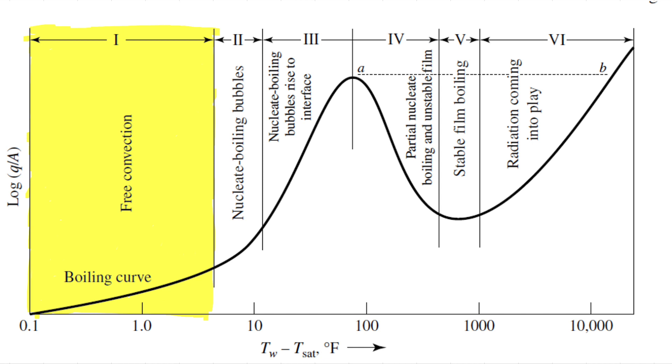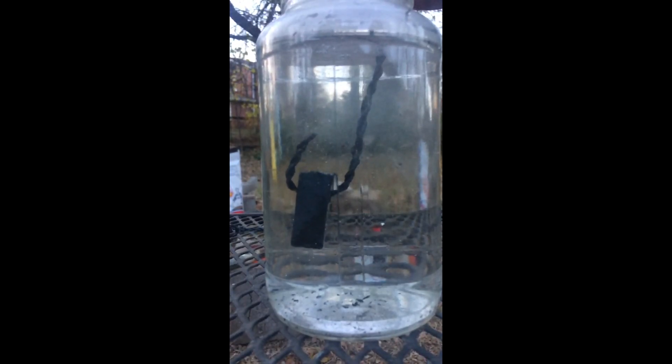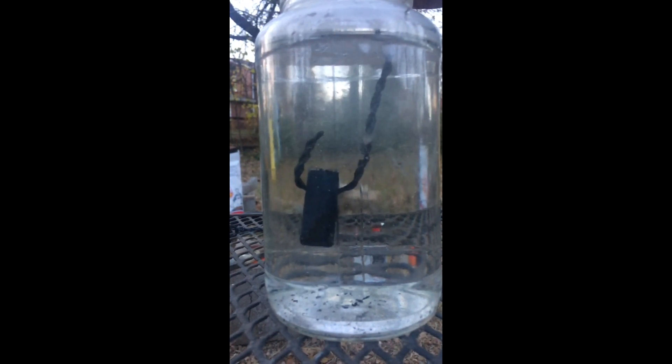While in regimen 1, we can see no visible signs of boiling other than the small signs of natural convection shown throughout the fluid, due to the differences in densities in the fluid and the possible evaporation on the fluid surface. This regimen's delta T values range from 0 to 10 degrees Fahrenheit.